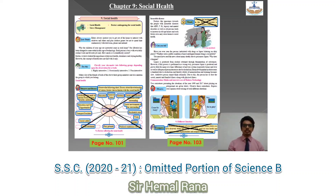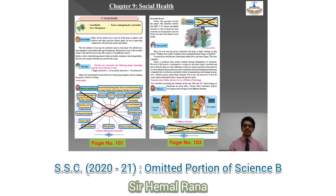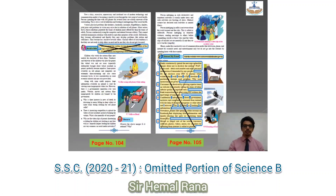Coming to Chapter 9, Social Health: you do not have 'Complete the Chart' on page 101. On page 102, the last yellow box and the 'Think' part on the right-hand side corner have also been removed. Coming to Chapter 10: on page 104 you do not have 'Recall a Little' — that part is removed.